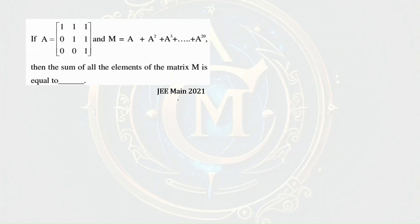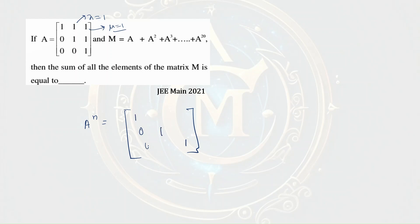This is a question from JEE Mains 2021. Here lambda equals 1 and mu equals 1. We know the general power n of this matrix, but here it is given as matrix A. So A to the power n will be: 1, 1, 1; 0, 0, 0; n, n, n plus nC2 — that is n plus n(n+1)/2.